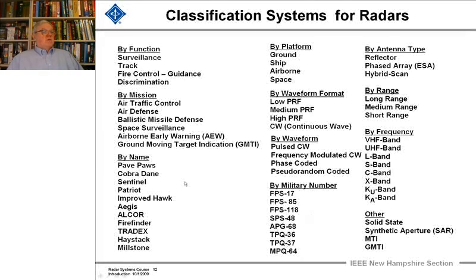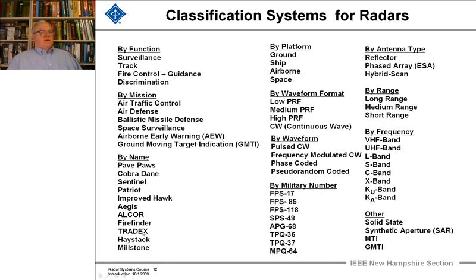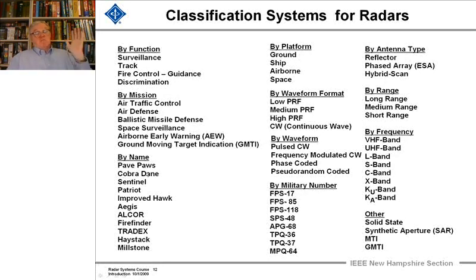There are names thought up by companies or the Pentagon where they don't necessarily want you to know the functionality. These are often acronyms that could stand for multiple things. For example, PAVE PAWS is a military designation — PAWS was chosen to stand for phased array warning system. But the government also has a more rational system for designating military radar systems.